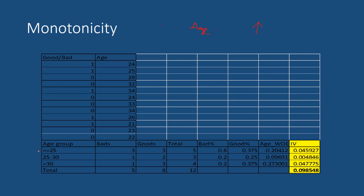When age is increasing — in the second group — the probability that a customer is going to be a good customer is higher, and in the last group greater than 30, it will be even higher. So intuitively, the independent variable age has a monotonic relationship with the dependent variable. Similarly for income: with increase in income, a customer is more likely to be a good customer. With a WoE transformation of income, we also need to check whether it follows a monotonic relationship.